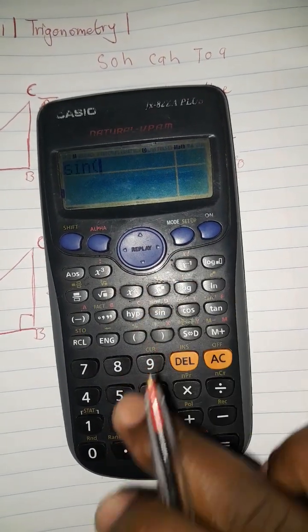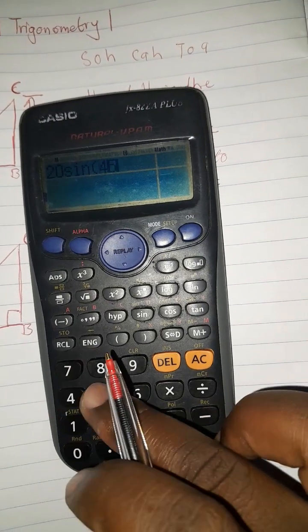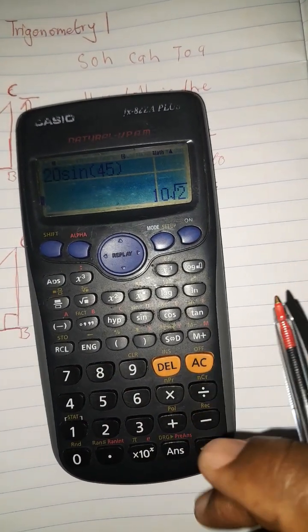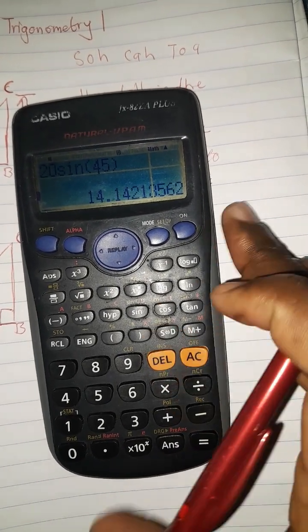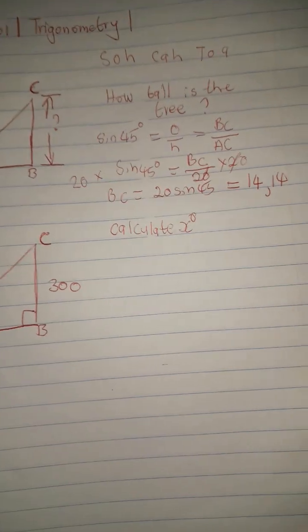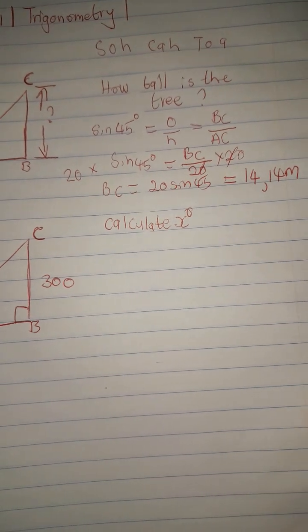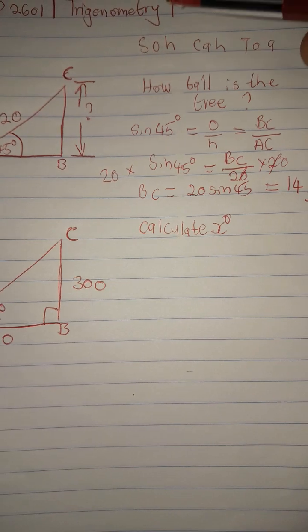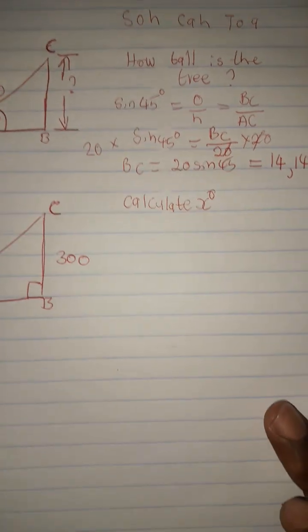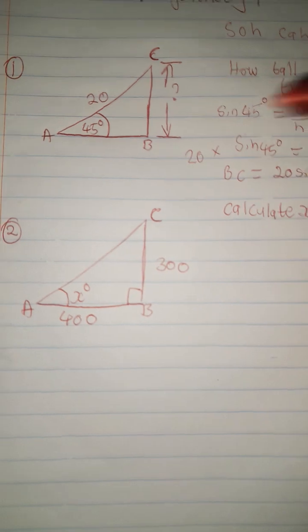Take your calculator and punch 20 × sin 45°. Press SD to convert to decimal. Leaving the answer in two decimal places, we get 14.14 meters. So the tree is 14.14 meters tall. Hope you've gained a valuable lesson on how to calculate a missing side using trigonometric ratios.